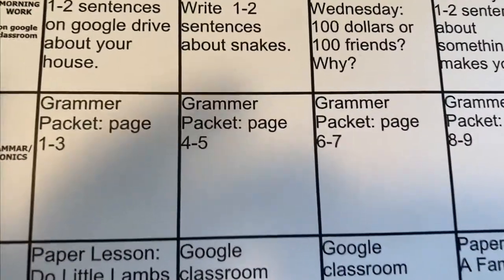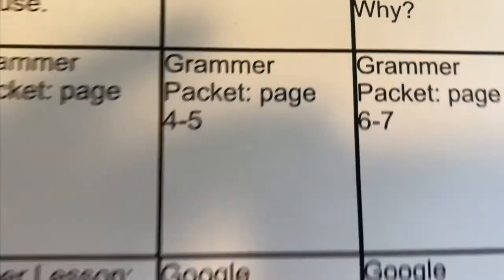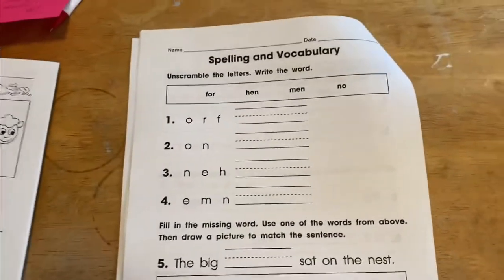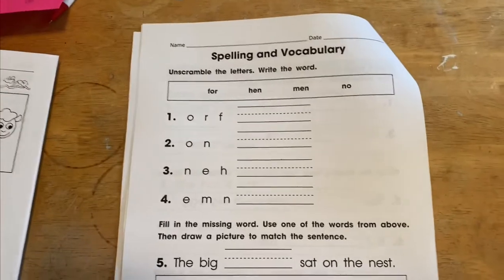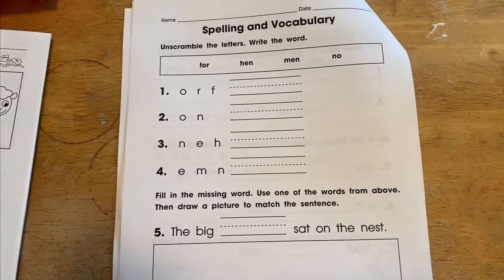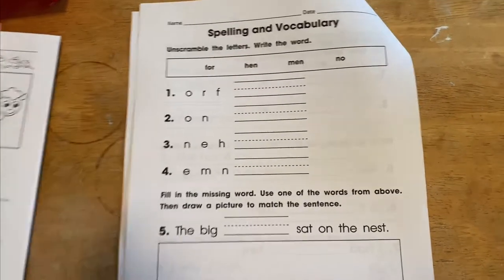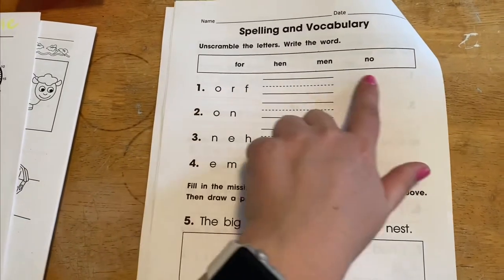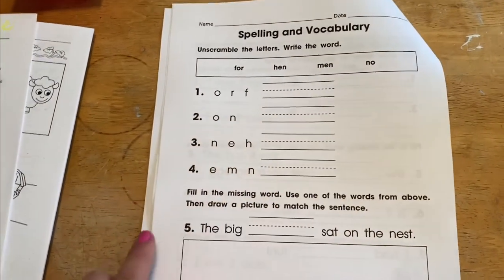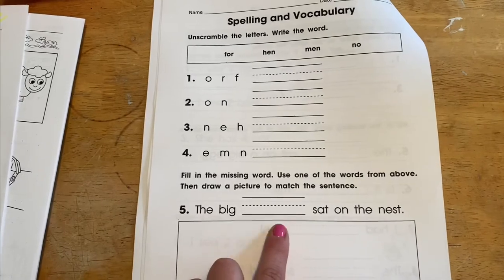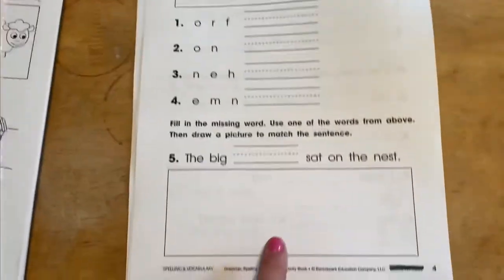We're on Tuesday of the grammar packet, pages four and five. Page four has the spelling and vocabulary words from Monday. They just want you to unscramble the words — the word box is up here if you need it. Then go ahead and fill in the missing word to the sentence and draw a picture.